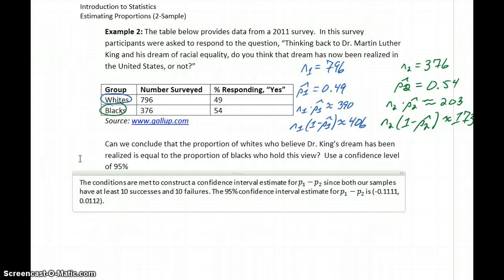In this case, our values range from negative to positive, so we know that 0 is contained somewhere in that interval. Since 0 is contained in our interval, we conclude that P1 equals P2, since 0 must be a likely value for the difference of those two proportions.